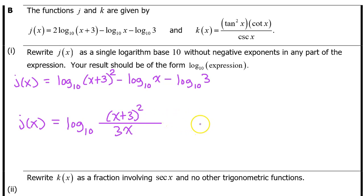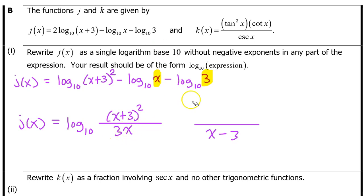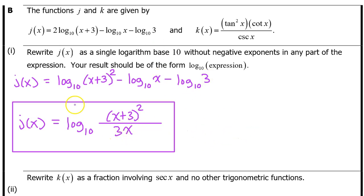A common mistake is for students to put x minus 3 in the denominator, but it doesn't work like that. It's all multiplication, so we get x times 3, which gives us 3x — not x minus 3. You can just leave your answer like this. Be careful not to cancel out the x's; you can never cancel out things that are connected by addition or subtraction.